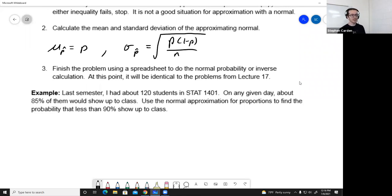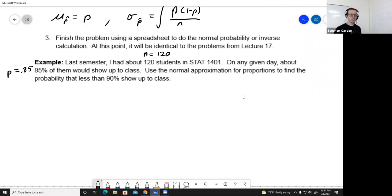So last semester, I had several sections of stat 14.1, 120 students. I can think of this as a sample size, a sample of 120 students. On any given day, about 85% of them would show up to class. Now, I wrote these notes before the pandemic. This is not true at all in the last few semesters. But let's say the showing up to class, the success category, the not showing up to class is a fail category. Maybe literally. So the population proportion in the success category is 0.85. Use the normal approximation for proportions to find the probability that less than 90% show up to class. So I read through it, and I recognize that, well, the proportion that show up to class, it's a sample proportion, that's random, and I can treat that as a normal as long as I meet the conditions.